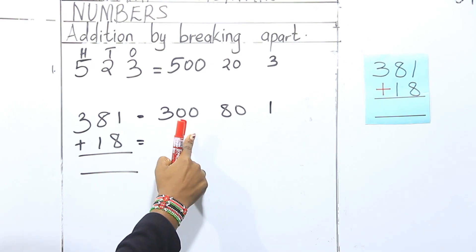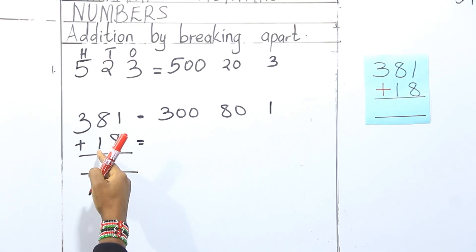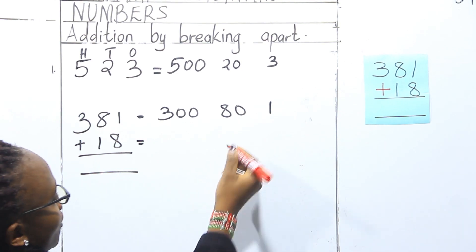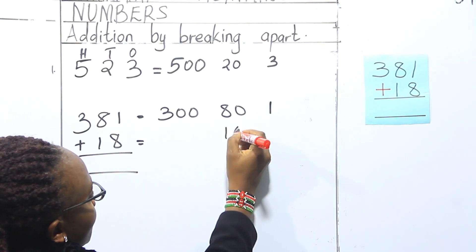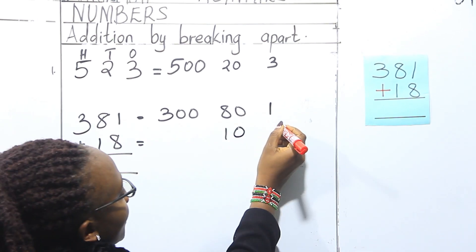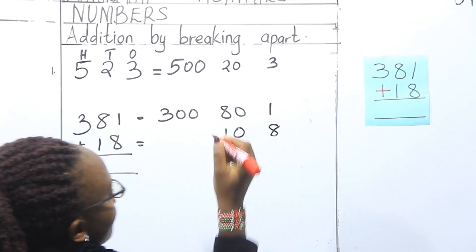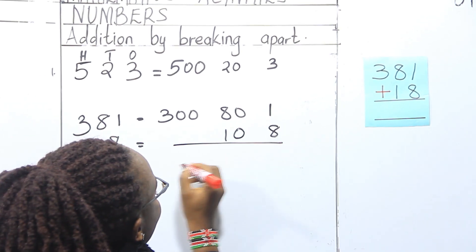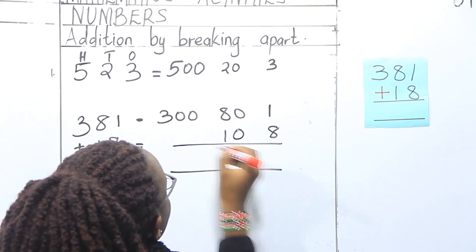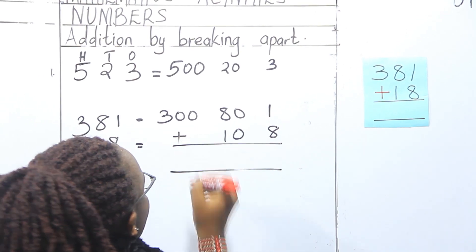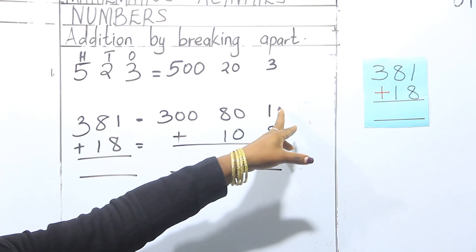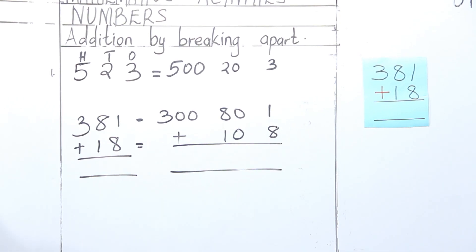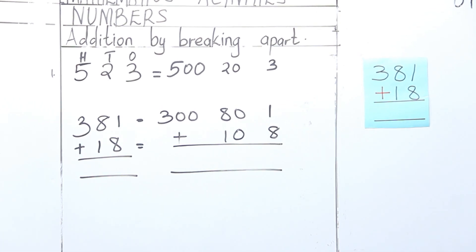Now let's break 18. We don't have hundreds here. We have one in the place of tens, which is ten, and then we have eight in the place of ones. Now let's add our numbers.